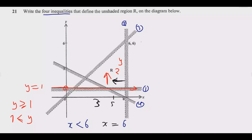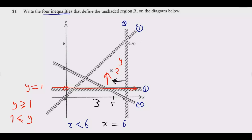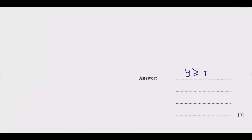To clarify: x < 6 means the same as 6 > x. Because line two is a broken line, unlike the previous one, we do not include the equal sign. So the second inequality is x < 6.